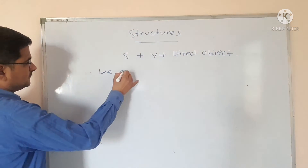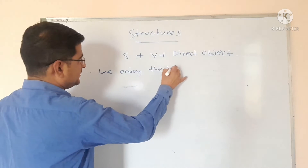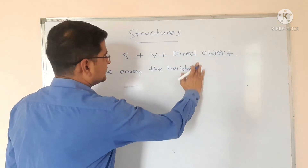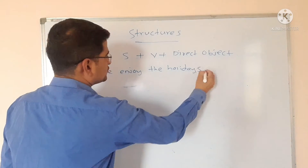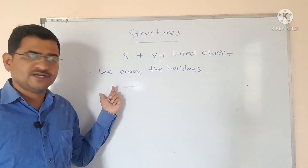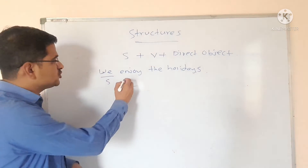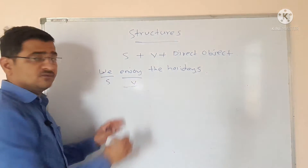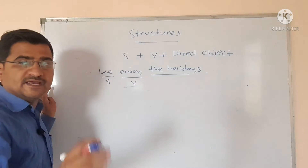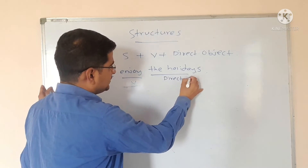We enjoy the holidays. In this particular statement, 'we' is an example of a subject, 'enjoy' is an example of a verb, and 'the holidays' is an example of a direct object.